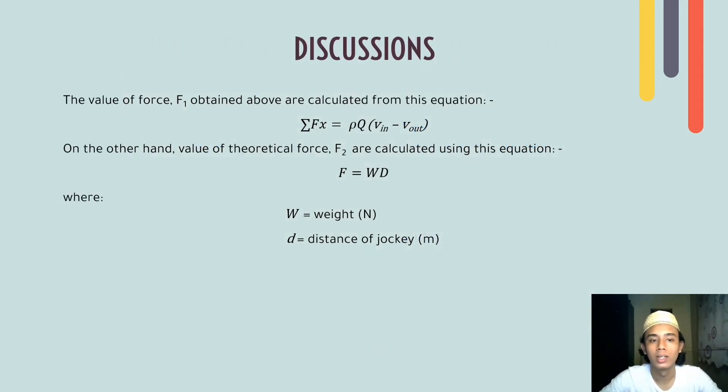For the discussion part, the value of force F1 obtained are calculated from this equation, which is summation of Fs equals ρQ(V_in minus V_out). On the other hand, the value of theoretical force F2 are calculated using this equation F equals WD, where W is weight in Newton and D is distance of torque.